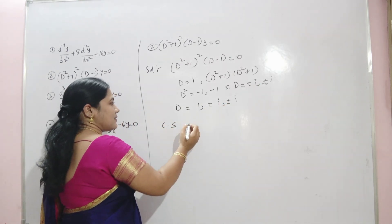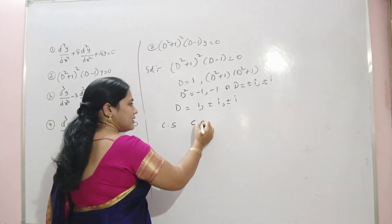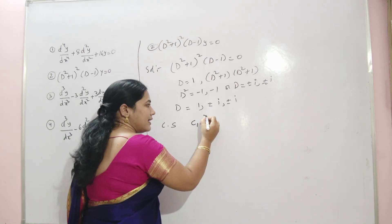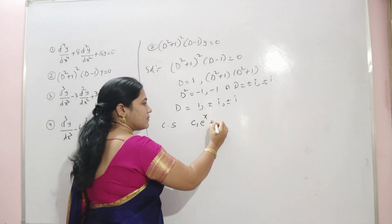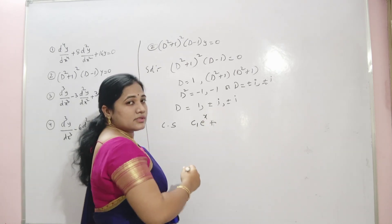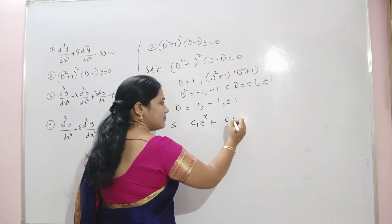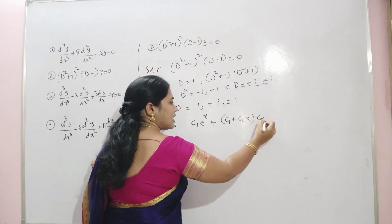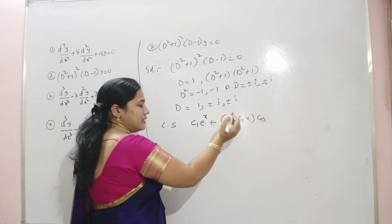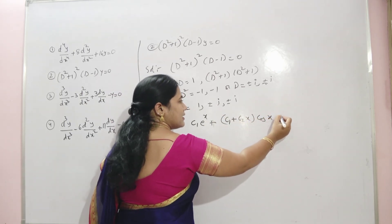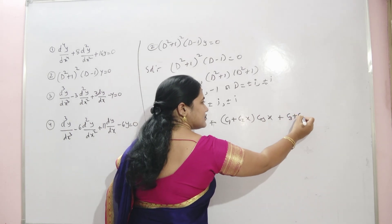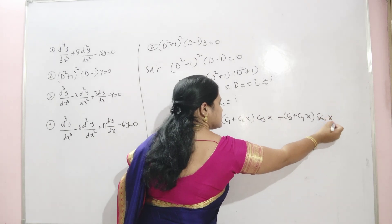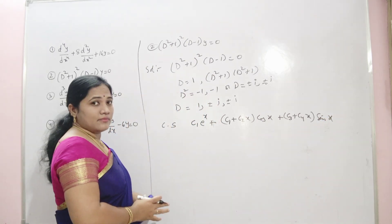The complete solution is: c₁e^x + (c₂ + c₃x)cos x + (c₄ + c₅x... wait, beta = 1 here, so: c₁e^x + (c₂ + c₃x)cos x + (c₄ + c₅x)sin x. This is the solution.